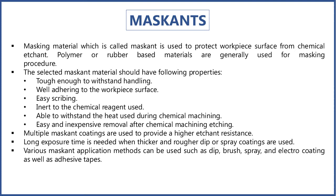The maskant is used to protect the workpiece from the chemical agent. Polymer or rubber-based materials are generally used for masking. The selected maskant should have the following properties: tough enough to withstand handling, well-adhering to the workpiece surface, easily scribed, inert to the chemical etchant used, able to withstand heat during chemical machining, and easy and inexpensive to remove. Multiple maskant coatings are used to provide higher etchant resistance when longer exposure time is needed.